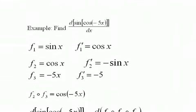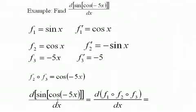Our formula would say that the derivative of the sine of the cosine of negative 5x is the derivative of f1 of f2 of f3.